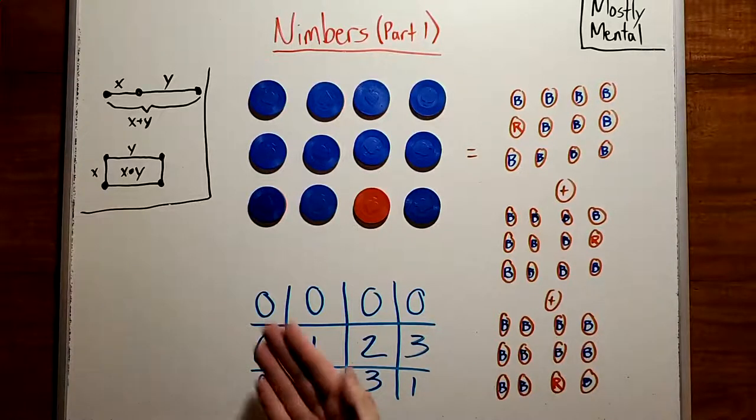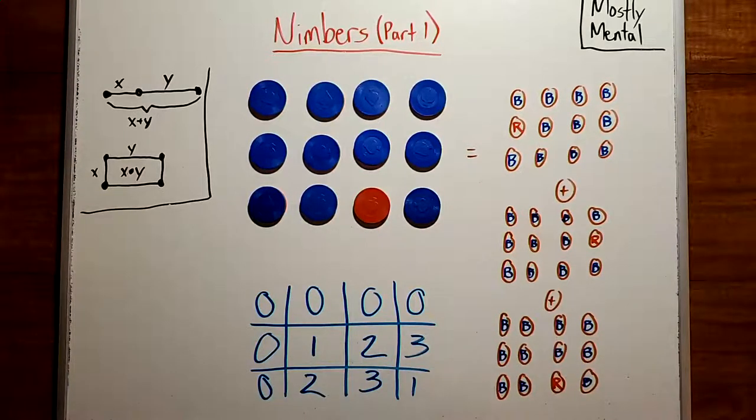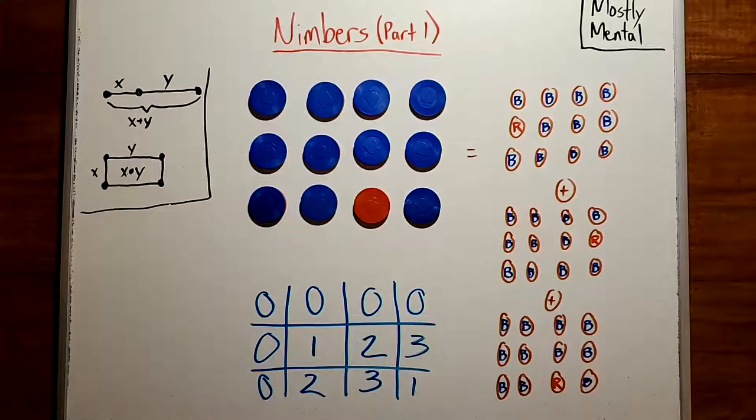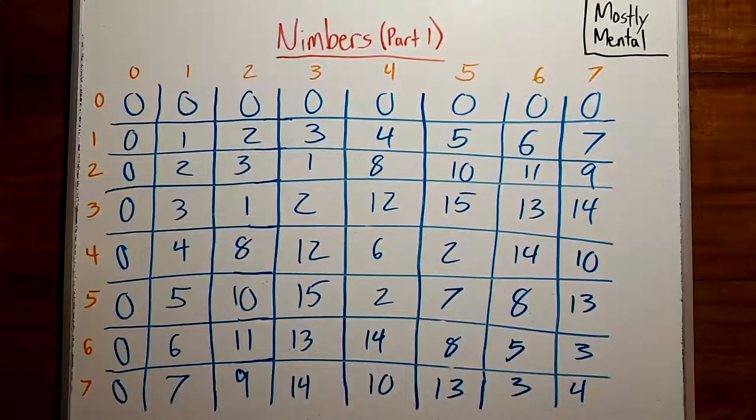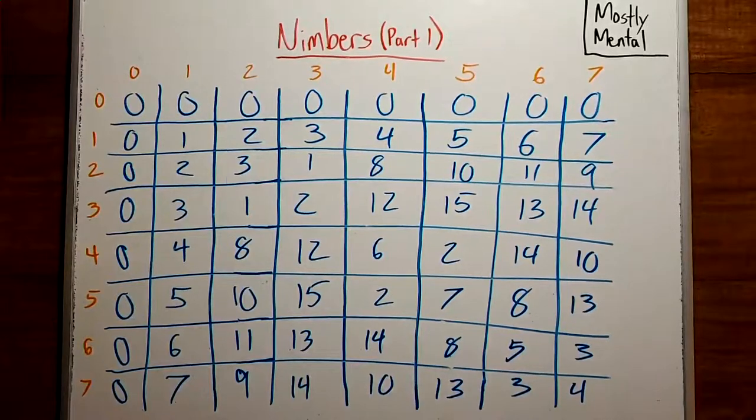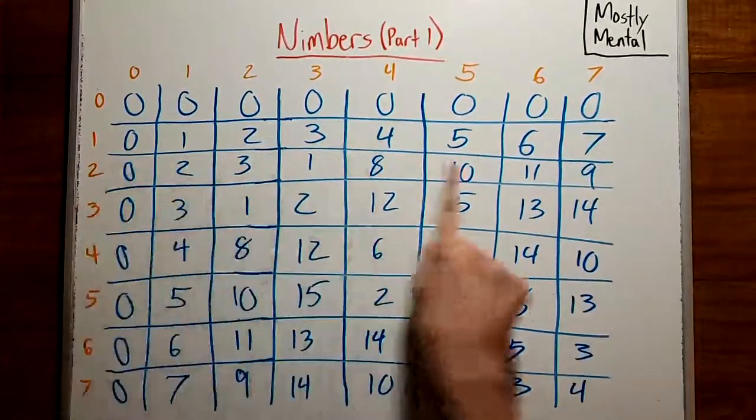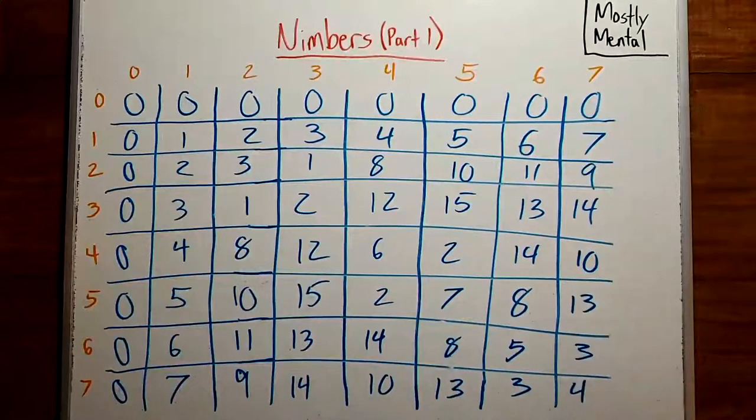We can fill in values for our table by looking at every possible rectangle and finding the minimum excluded sum. So let's expand this a little bit further. Now that we have some more values, we can start to see some patterns. For one, this looks a lot like a multiplication table.